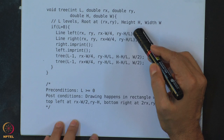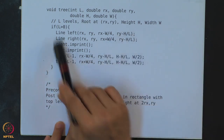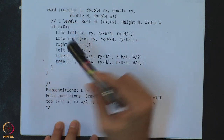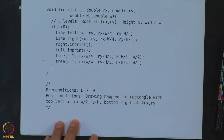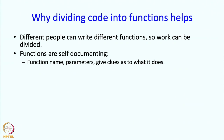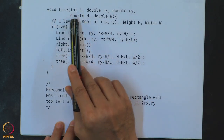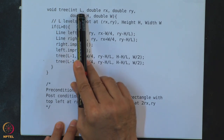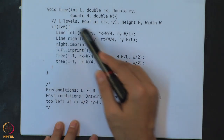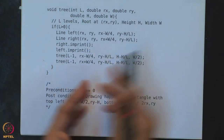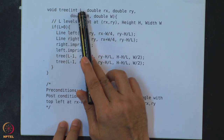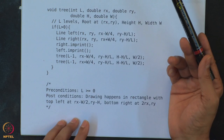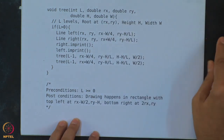Even if you are not going to recurse, just the fact that there is a name forces you to say something about what is being done. Of course this works only if you choose the name nicely. For example, you could write 'int level' instead of just 'l'. Good programmers use much longer, descriptive names — instead of 'rx' you could say 'root_x' or 'x_root', whatever style you prefer.